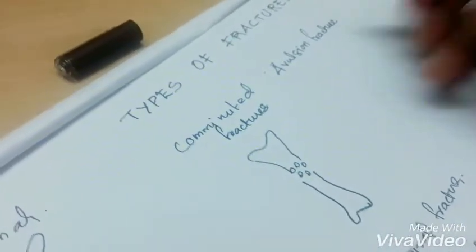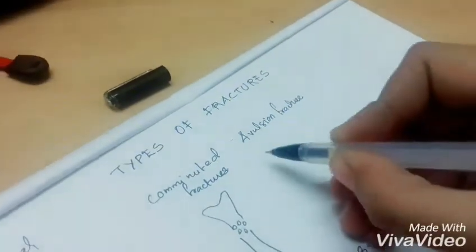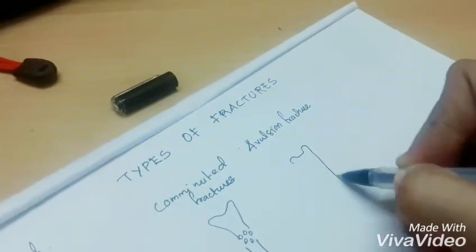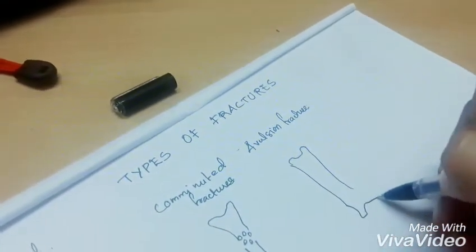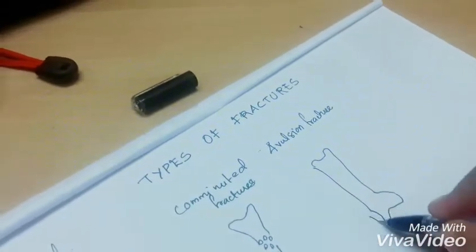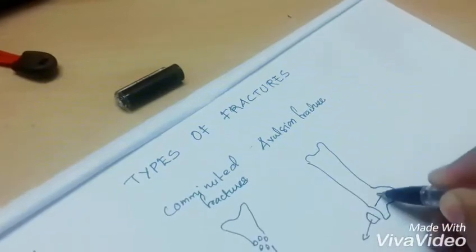Avulsion fracture. Here injury to the bone occurs where there is attachment of tendons and ligaments. The bone is pulled by the ligaments and tendons.